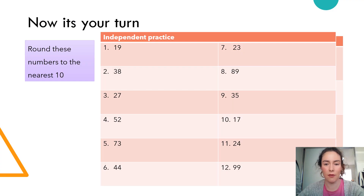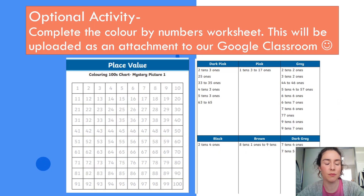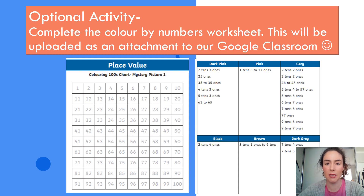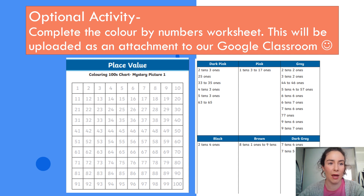Now it's your turn to have a go at rounding numbers to the nearest ten, then rounding to the nearest hundred. Your optional activity to complete today is a color-by-numbers sheet. For dark pink, it is a number that is two tens and three ones, which is 23 — so wherever there's a 23 you'll color it dark pink. I'll attach this to Google Classroom as a proper attachment so it's easier to print. Hope you've enjoyed all your maths work this week and I'm really looking forward to seeing it and marking it.